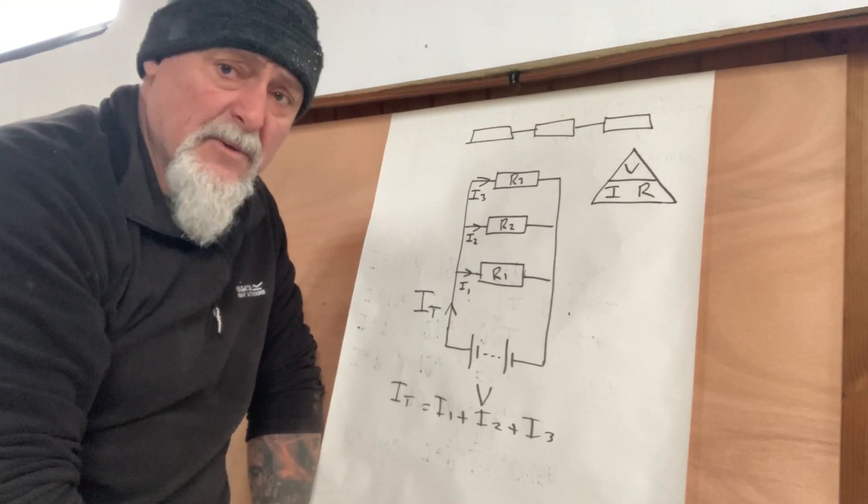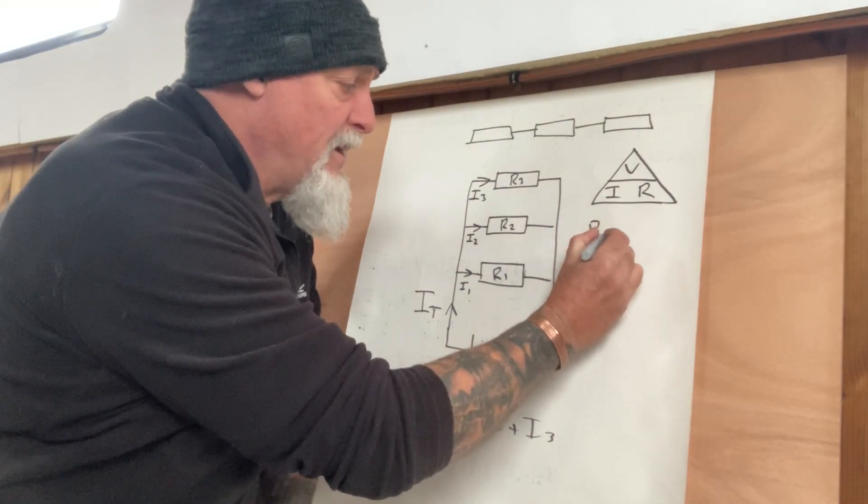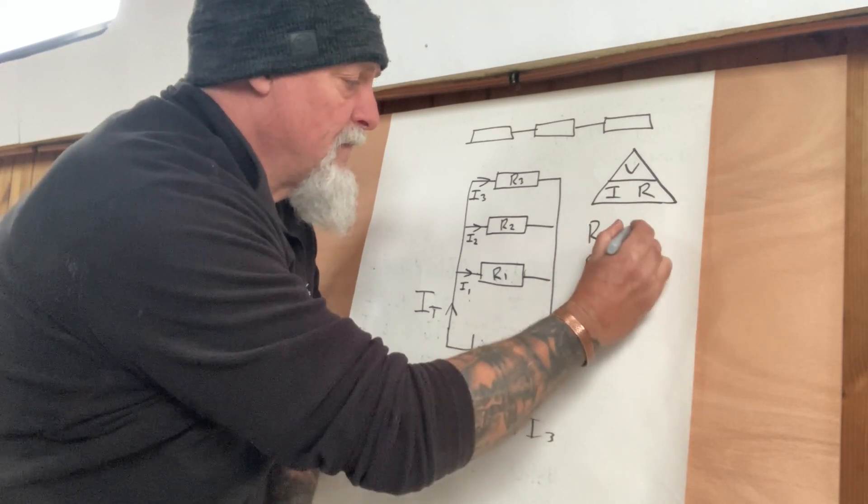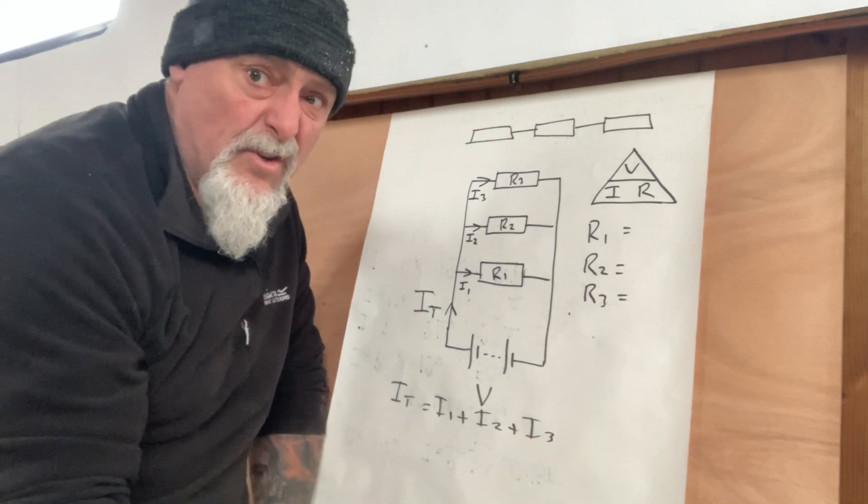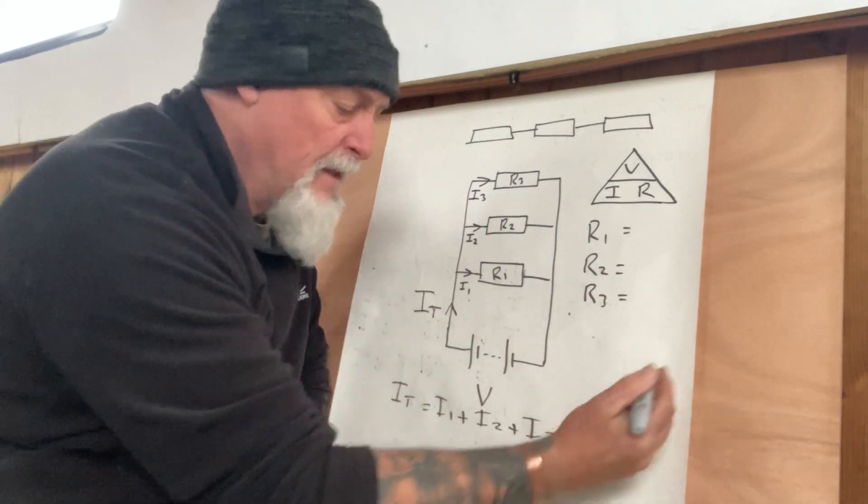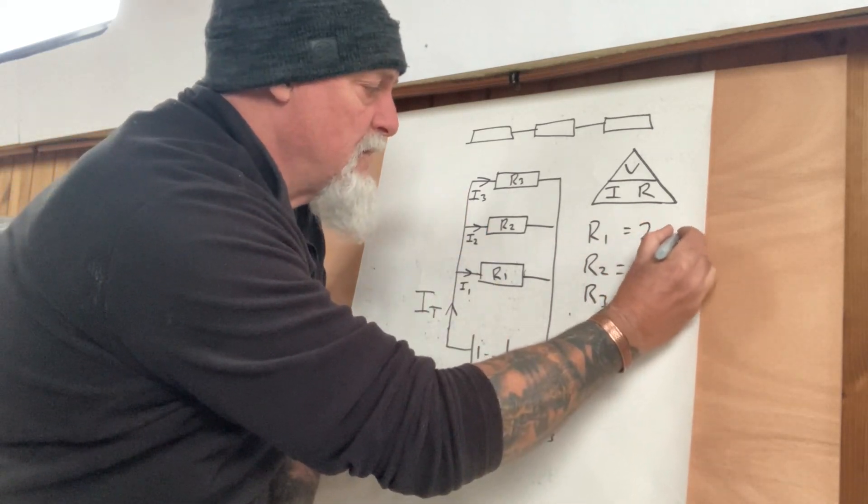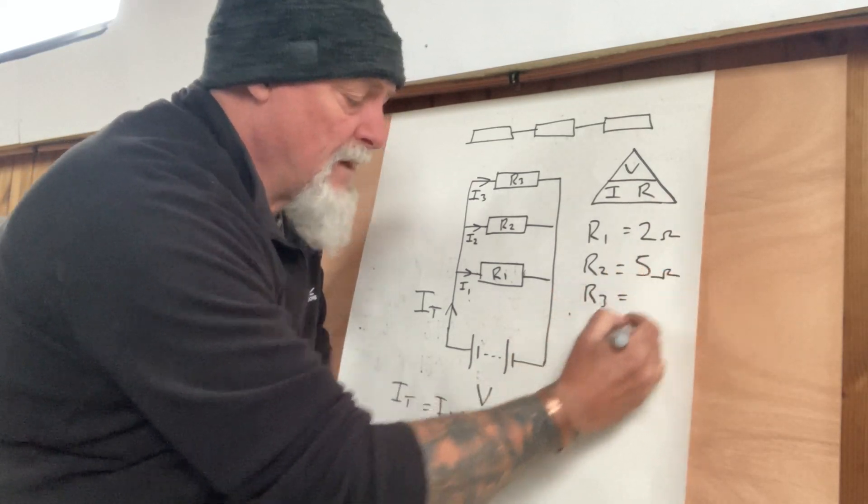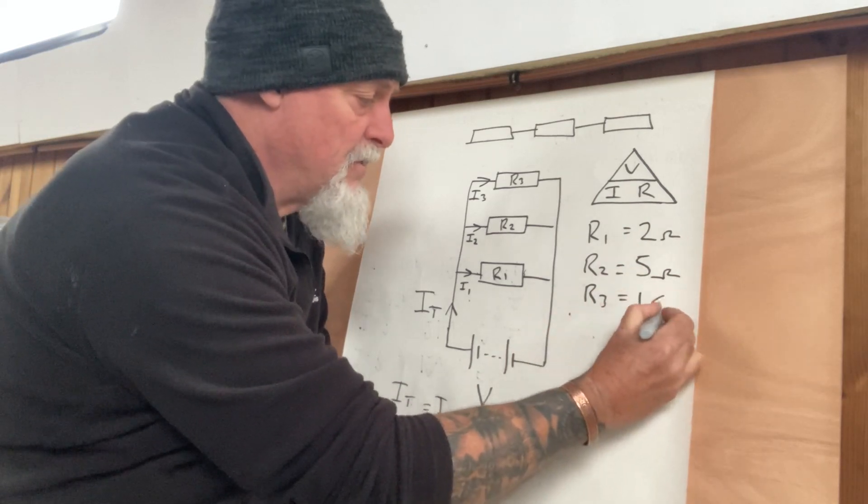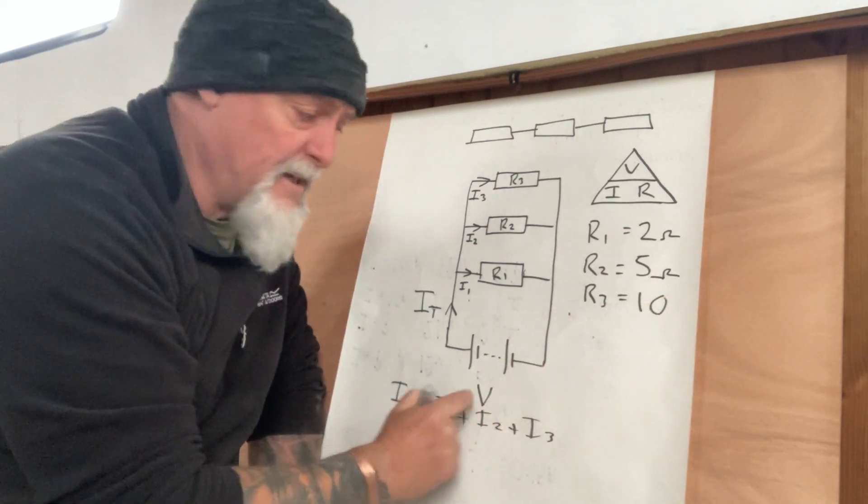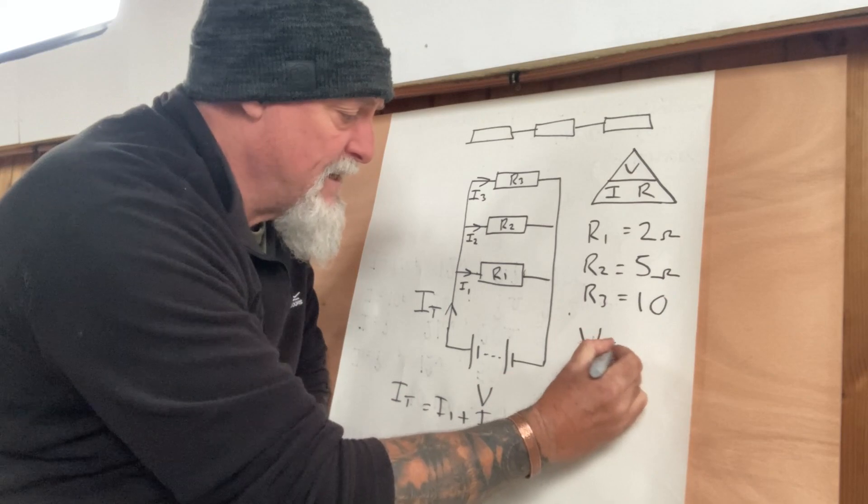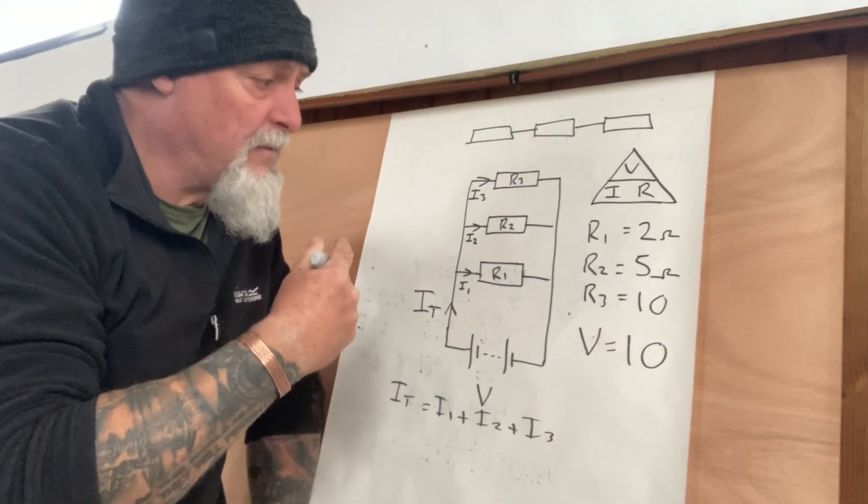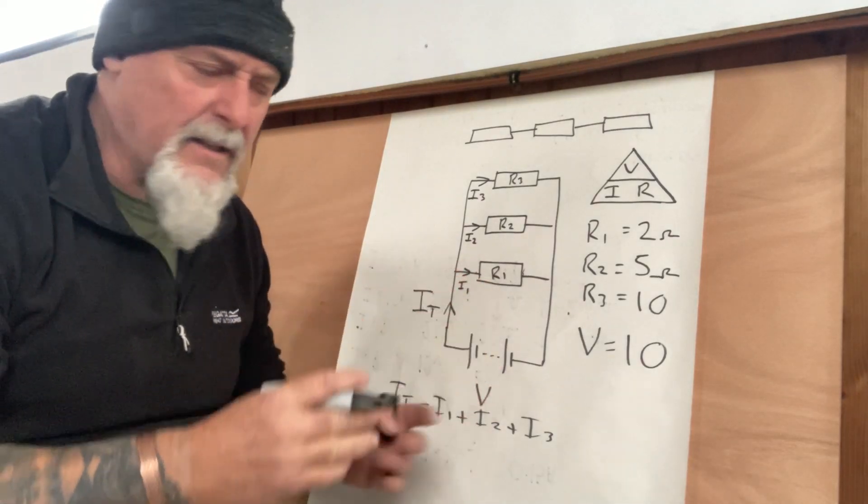So we put some numbers in. If we say R1, R2, and R3, give these a value and we make the values nice and easy so we're just working in our heads. I want 2 ohms for R1, R2 is 5 ohms, and R3 is 10 ohms. And we'll make our voltage, again, some nice and easy 10 volts.